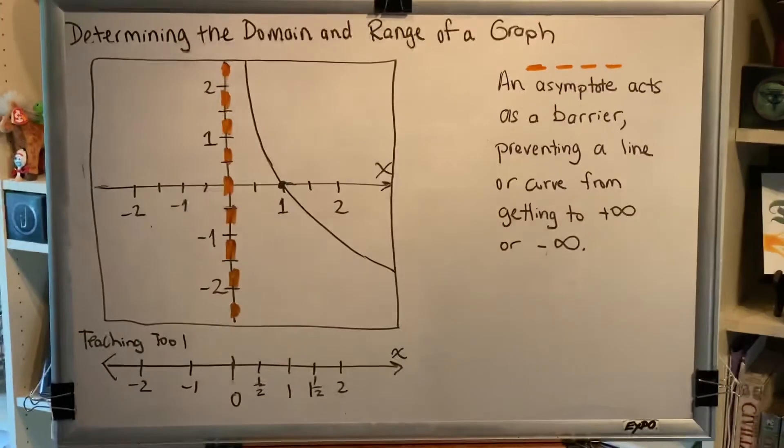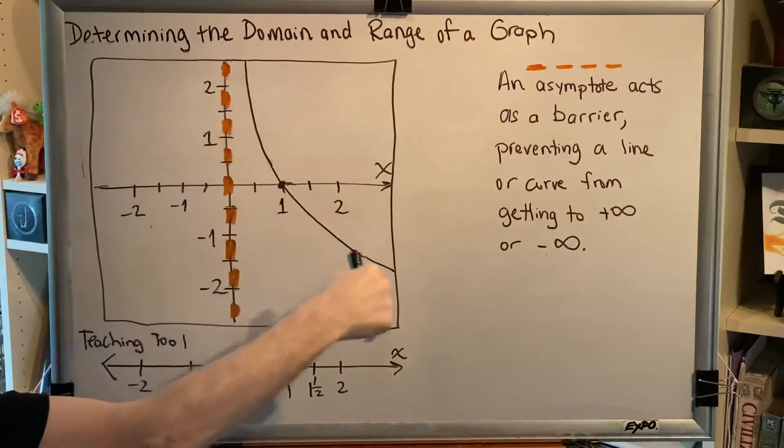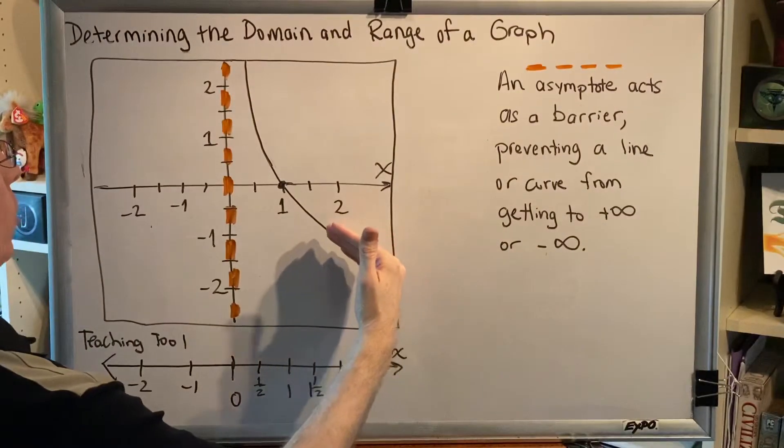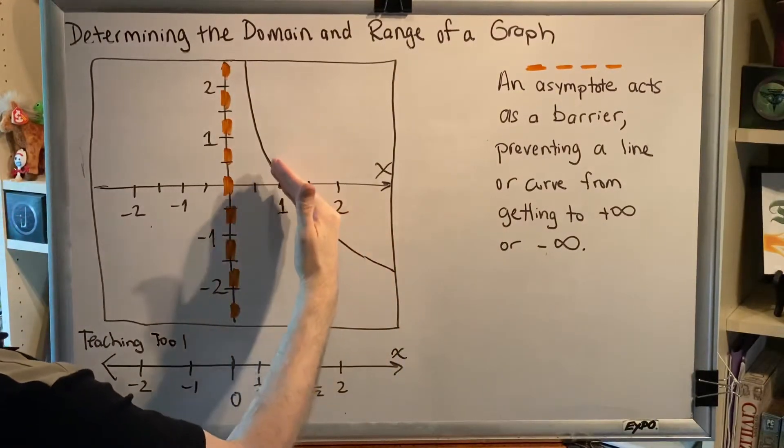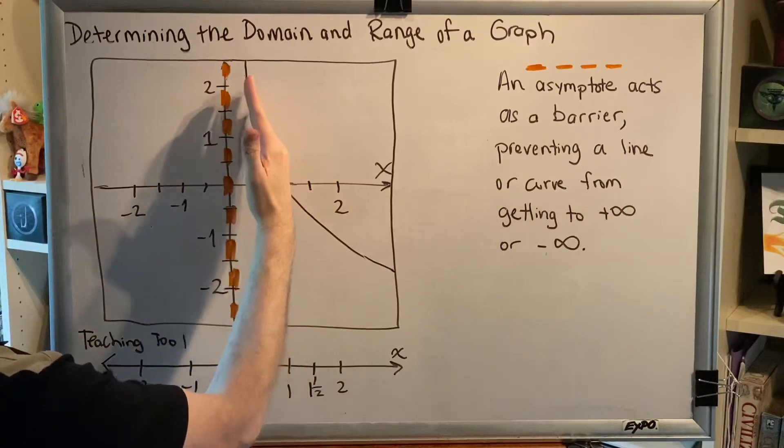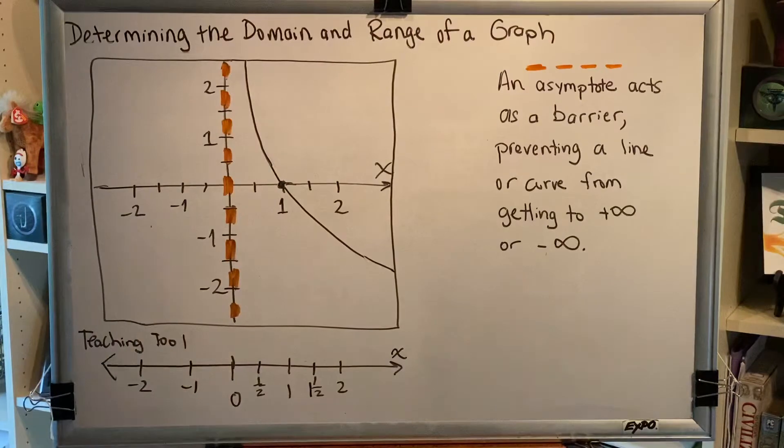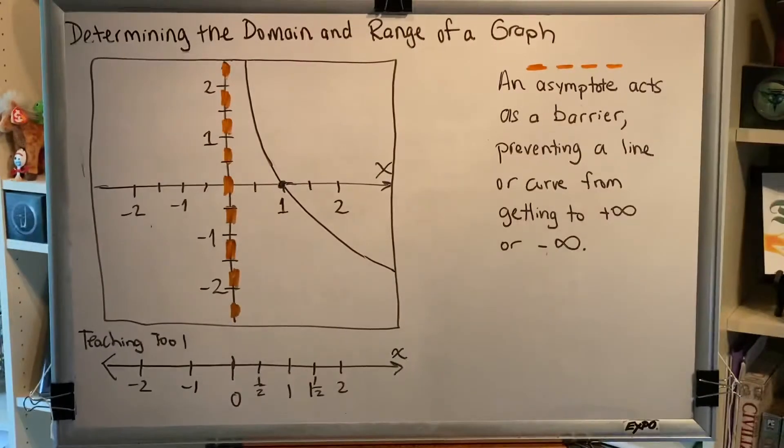This is a vertical asymptote and that's telling us what our black curve is doing. As we travel along our black curve from right to left, we are going up but we are also going to the left because we are forever approaching but never reaching this asymptote, this orange dashed line.